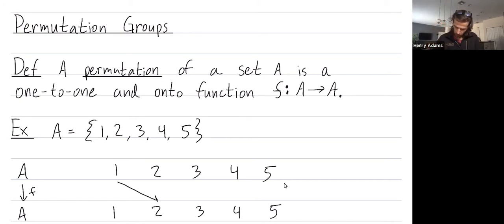So maybe we map 1 to 2, maybe we map 2 to 3, and then 3 to 1, and perhaps we send 4 to 5. And 5 can't go to 5 because it wouldn't be one-to-one. Two elements are colliding at the same spot. For the same reason, 5 can't go to 3.